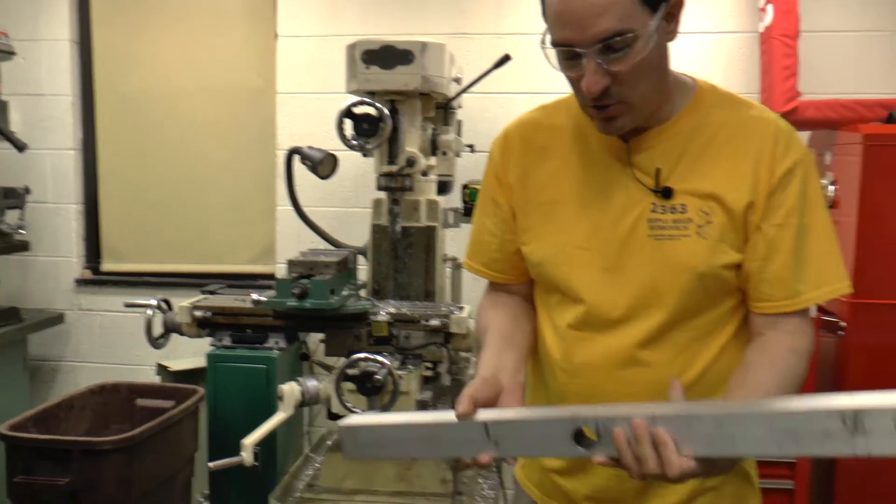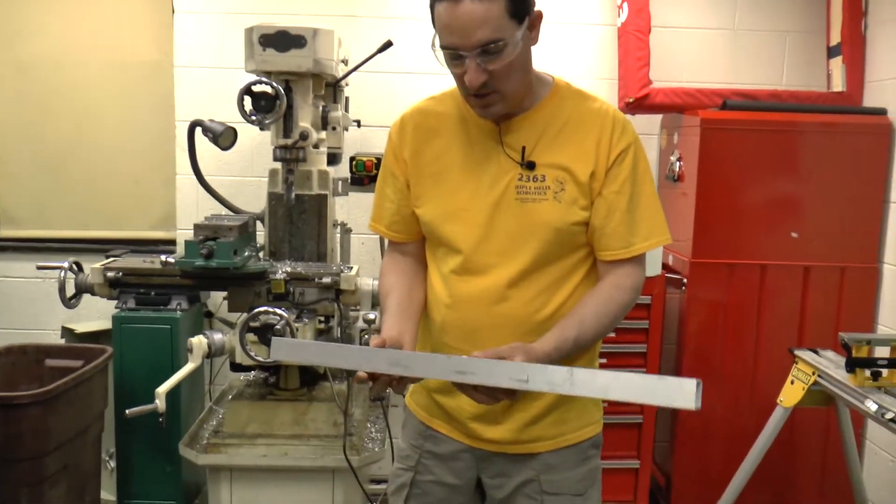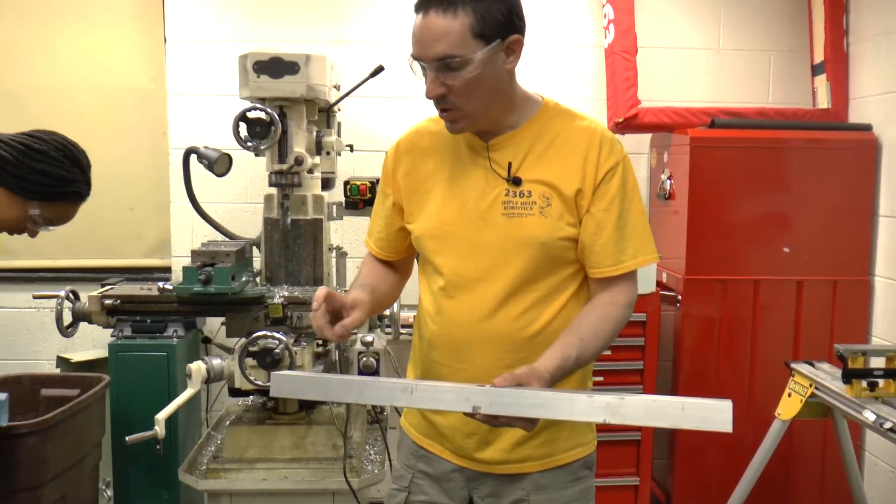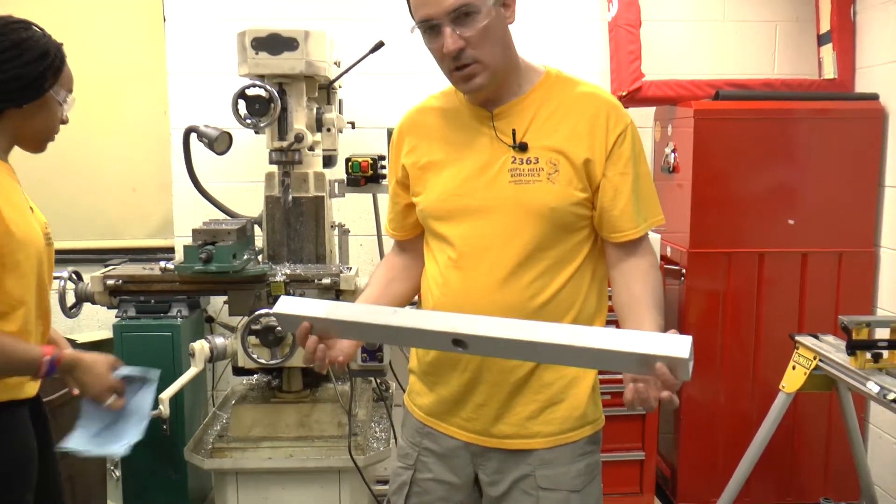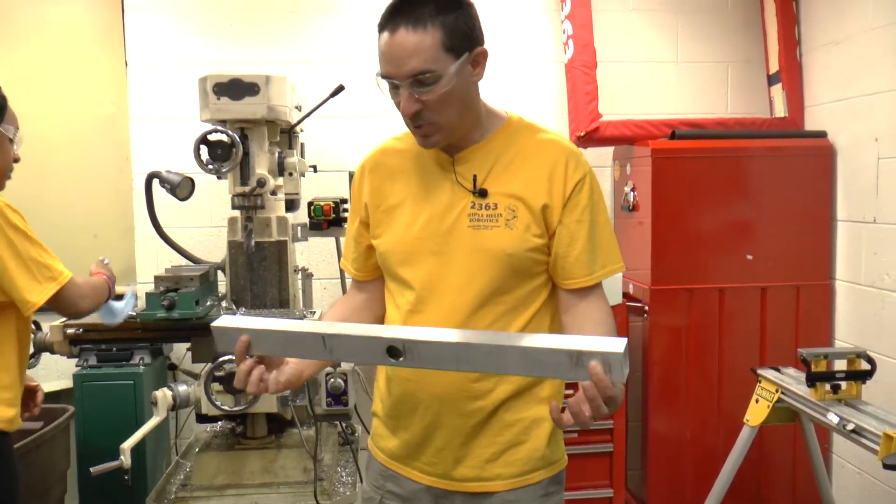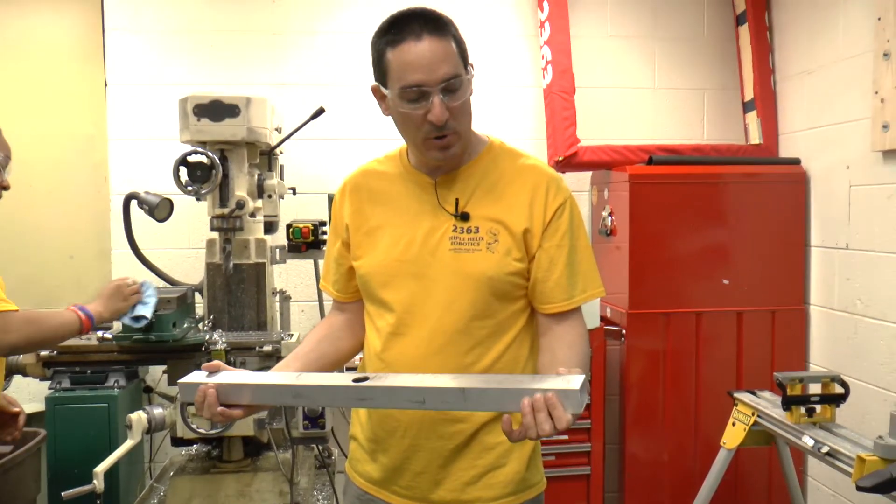Our first center hole is drilled. It's on size and now we can work on our outside holes. And the outside holes don't have to be done on the milling machine because they don't have to be super precise. So we're going to do them on the drill press instead.